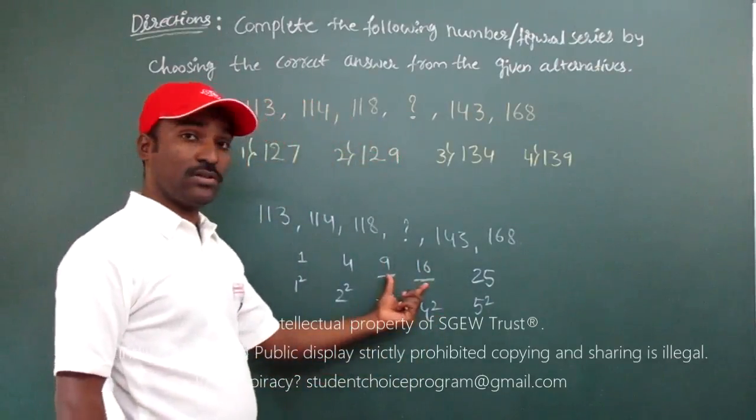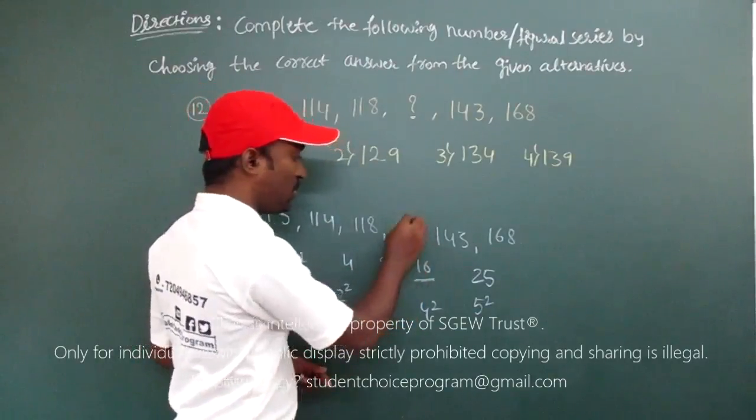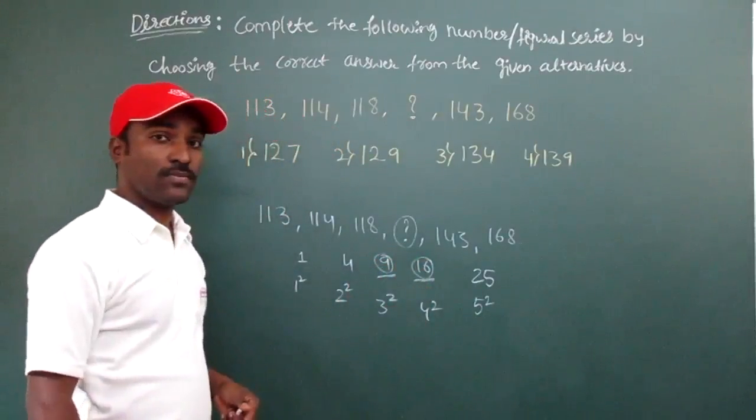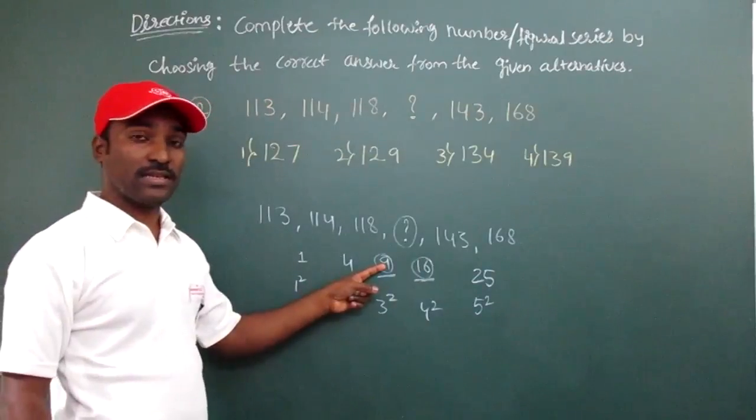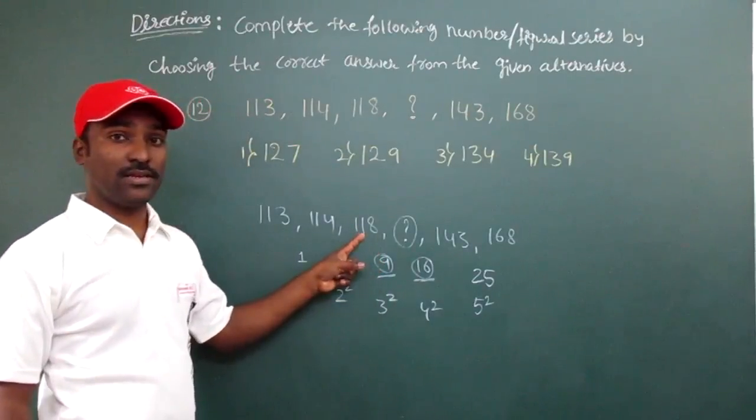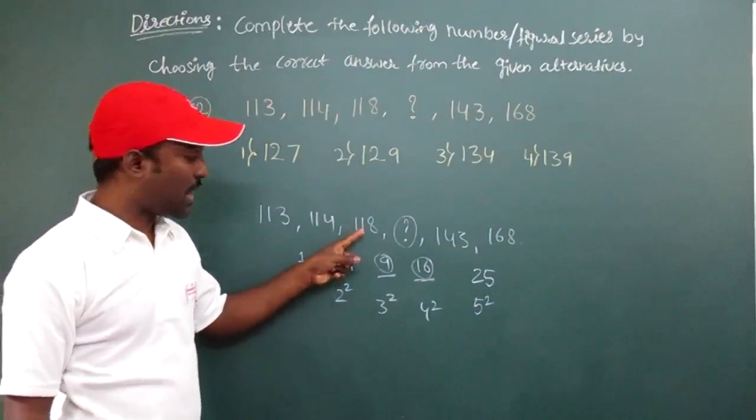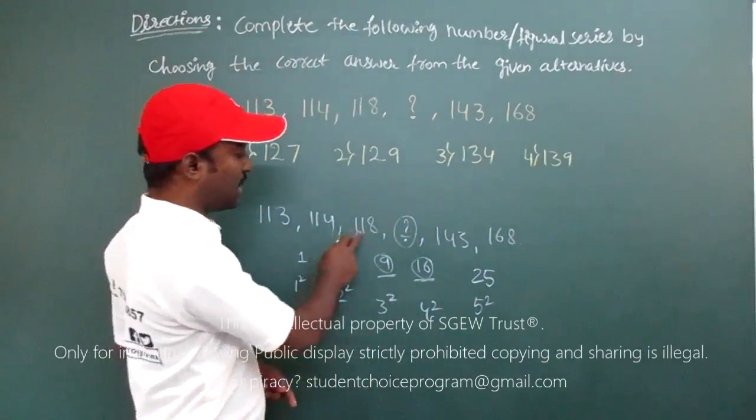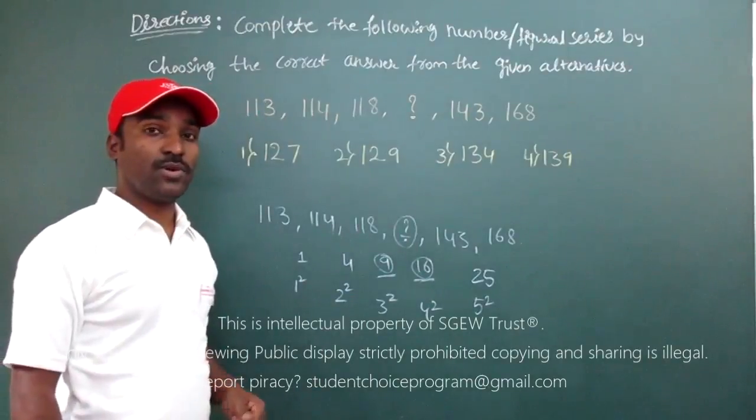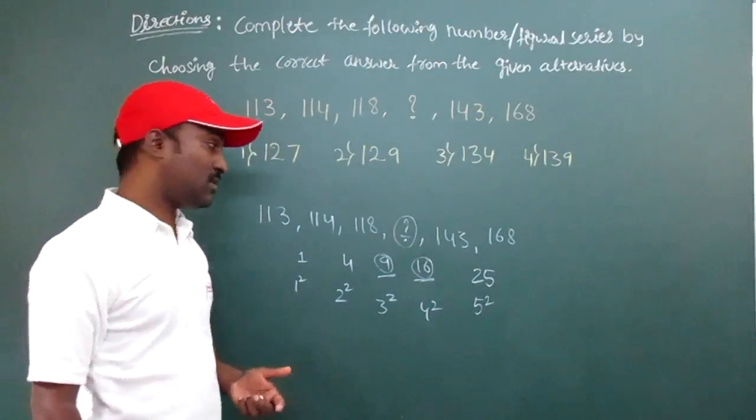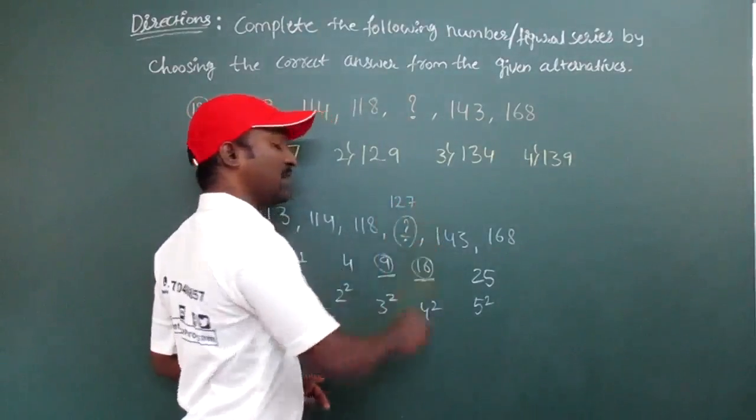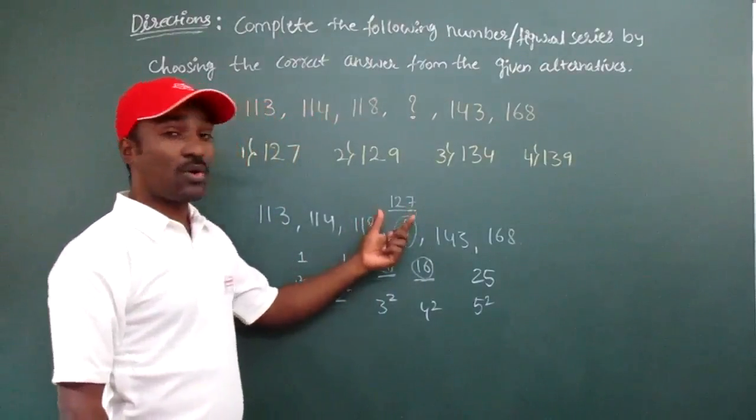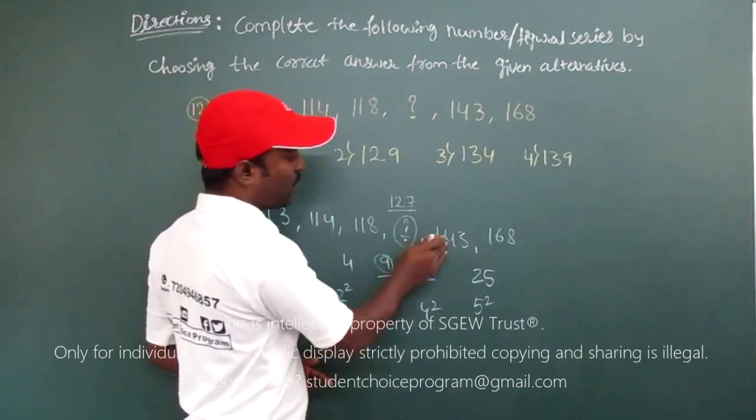Now I got these numbers. The next step is to get these numbers. What I have to do? I have to use these numbers. How I can use this 9? I have to use this 9 with 118. What I have to do? I have to add 118 plus 9, that will give me this missing number. So what is 118 plus 9? It is 127. So this is my missing number.